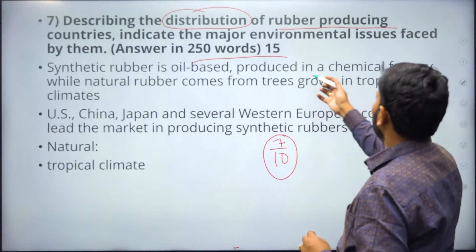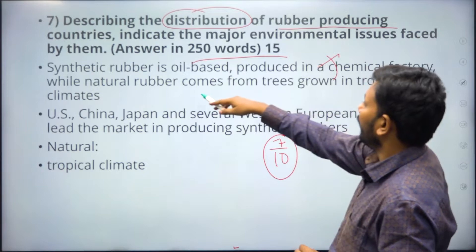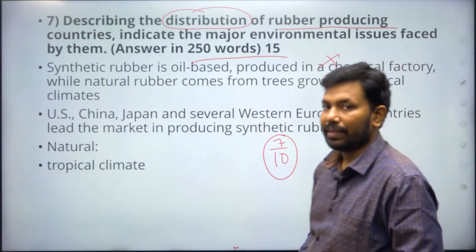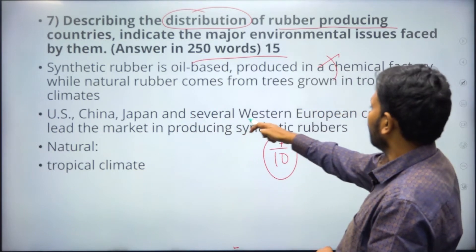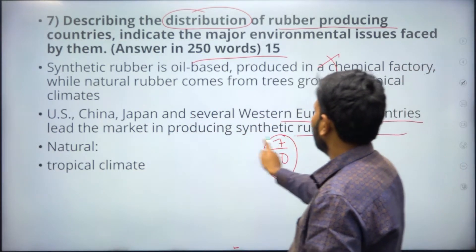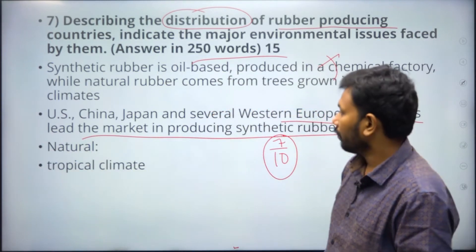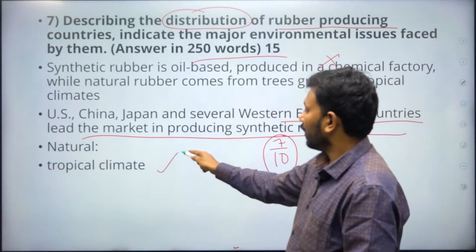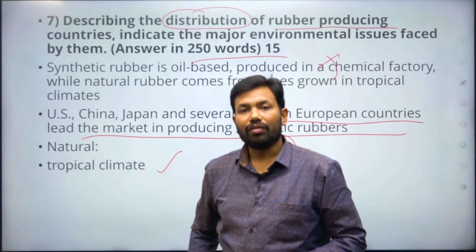Synthetic rubber is oil-based and produced in chemical factories — we are not concerned with that here. Natural rubber comes from trees grown in tropical climates. China, Japan, and several Western European countries lead in synthetic rubber production, while tropical countries dominate natural rubber production.